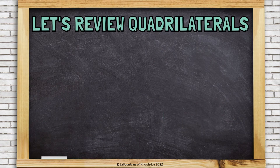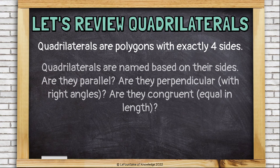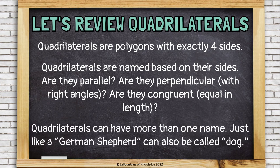Let's review quadrilaterals. Quadrilaterals are polygons with exactly four sides. They are named based on their sides — are they parallel? Are they perpendicular with right angles? Are they congruent, meaning equal in length? Quadrilaterals can have more than one name, just like a German shepherd can also be called a dog.